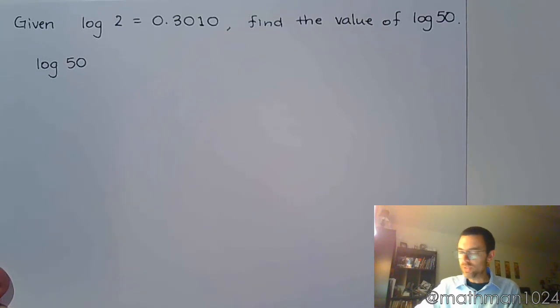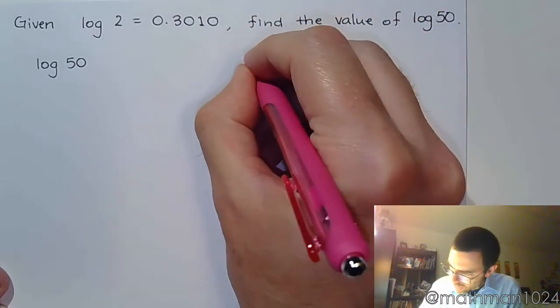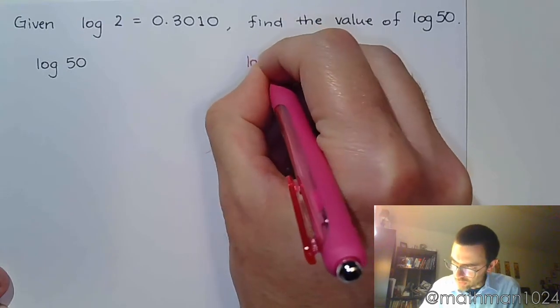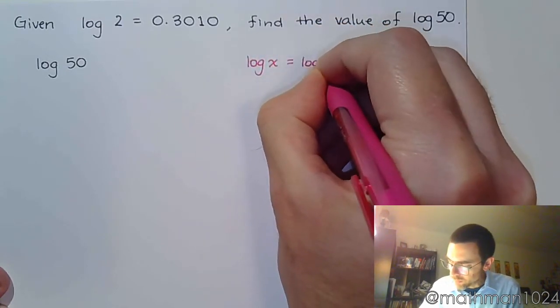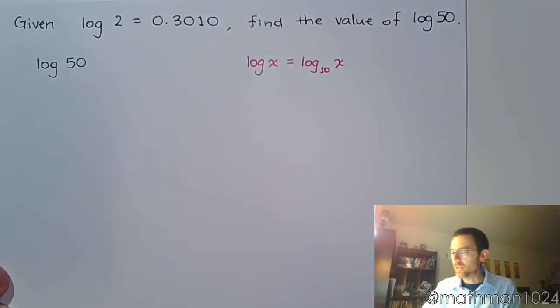The thing we need to remember is this: when you see something like log of x, we remember that this is log base 10 of x. So if there's any way to get powers of 10 out of the 50, it would be okay, because that's stuff that we automatically know, right?